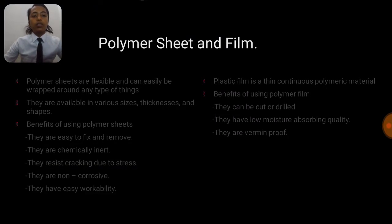This is the polymer sheets and film's characteristics. Firstly, polymer sheets are flexible and can easily be wrapped around any type of things. They are available in various sizes, thicknesses and shapes. Benefits of using polymer sheets: they are easy to fix and remove, they are chemically inert, they resist cracking due to stress, they are non-corrosive and they have easy workability.